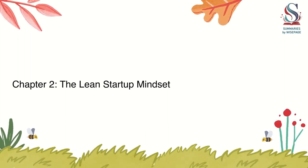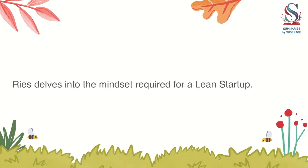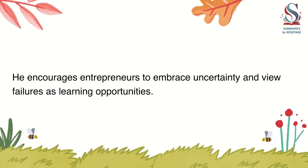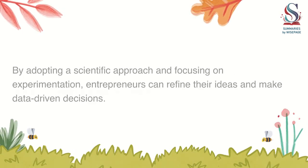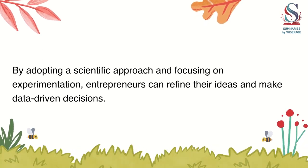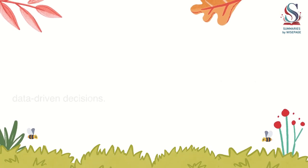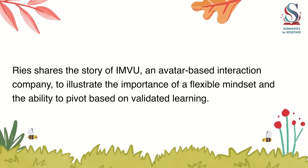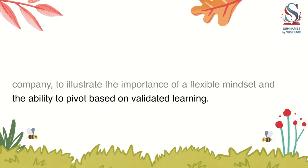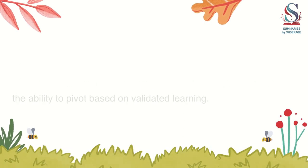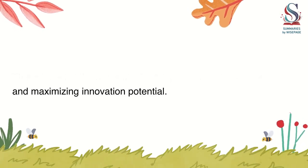Chapter 2: The Lean Startup Mindset. Ries delves into the mindset required for a Lean Startup. He encourages entrepreneurs to embrace uncertainty and view failures as learning opportunities. By adopting a scientific approach and focusing on experimentation, entrepreneurs can refine their ideas and make data-driven decisions. Ries shares the story of IMVU, an avatar-based interaction company, to illustrate the importance of a flexible mindset and the ability to pivot based on validated learning. This mindset shift is essential for adapting to market dynamics and maximizing innovation potential.